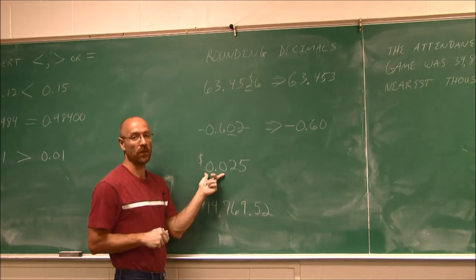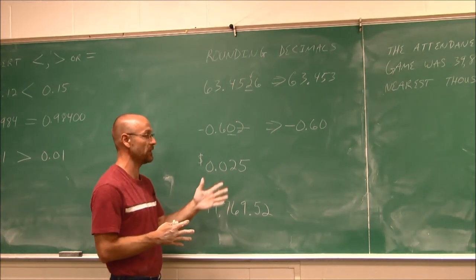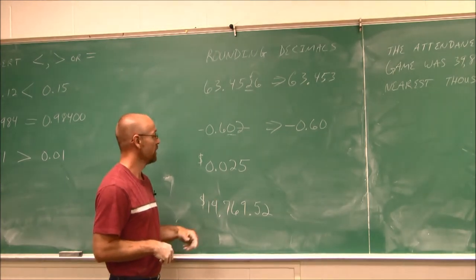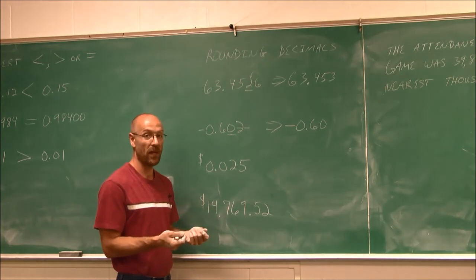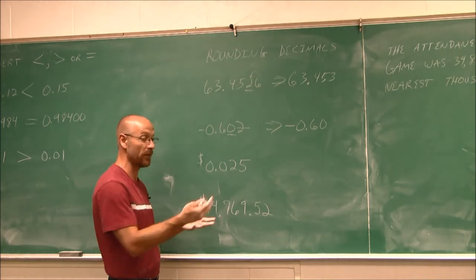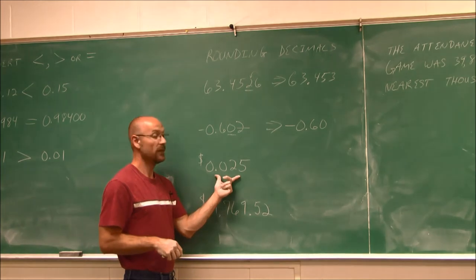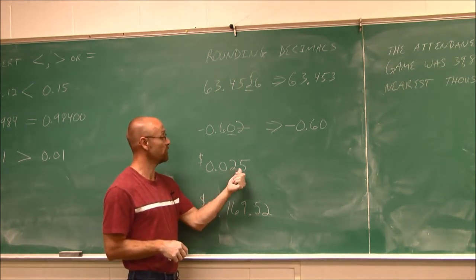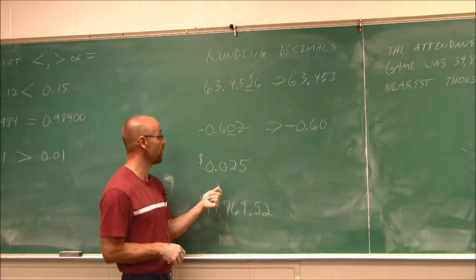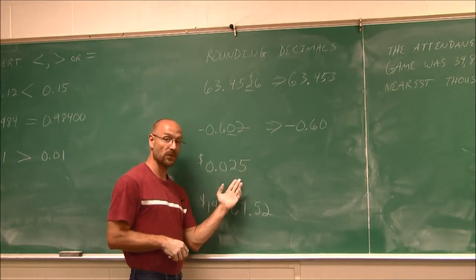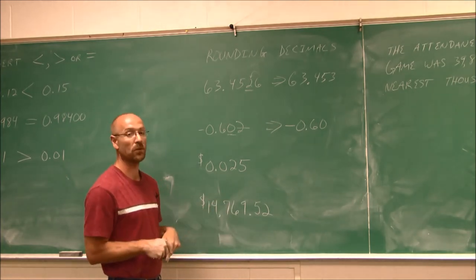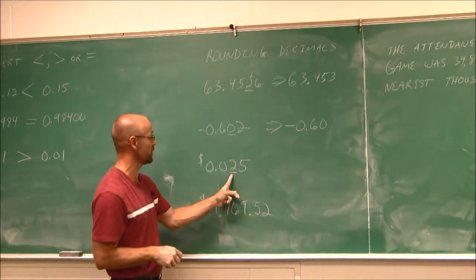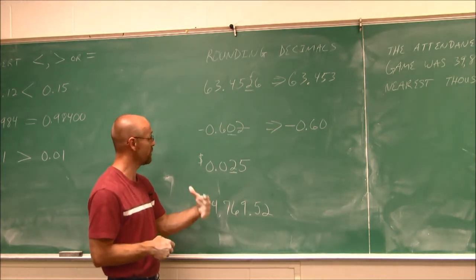What if we're dealing with money? For example, at the gas station the price is $3.79 and 9 tenths per gallon. I can't have 1 tenth of a penny, so rounding must happen. Here's an example where we have $0.025. We have to do rounding — we're going to round to the hundredths place, which is our penny position: 100 pennies per dollar.